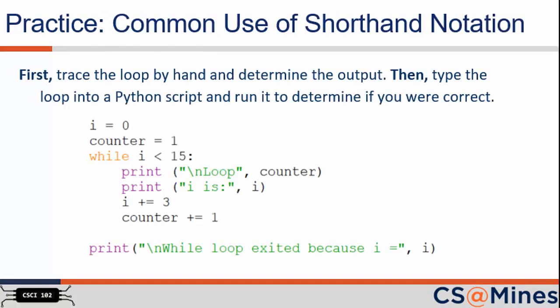Shorthand notation is often used in loops, as you often use counters in loops. We recommend you pause the video one more time and execute the code shown. We recommend you use a pencil and paper to keep track of i and counter as you trace the loop on the slide by hand. We also suggest you write down what is printed along the way. After you've finished tracing, we recommend you type the code into a Python file, execute it, and check whether your paper answer is correct or not.